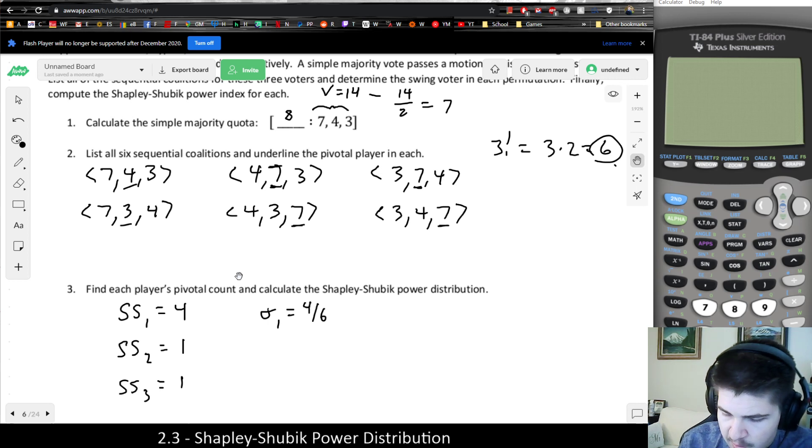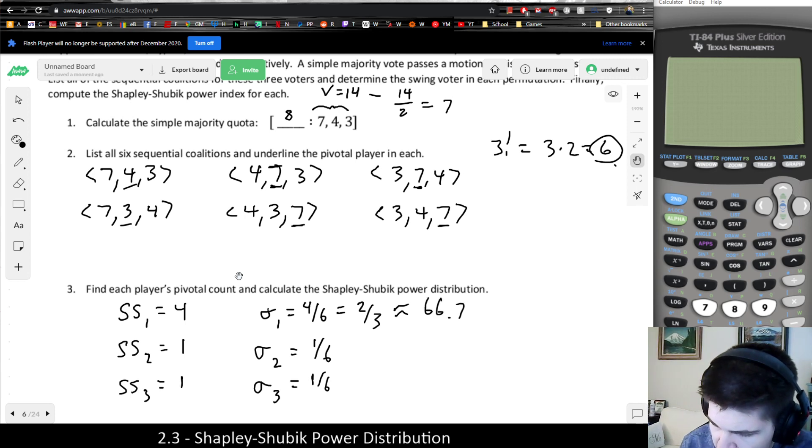And then we would take part over total. Since there's 6 total pivotal counts, player 1 is 4 out of 6, which would be 2 thirds. Player 2 was 1 out of the 6 total, and player 3 was also 1 out of the 6. And so again, reduce the fractions and convert to percentages. But that would leave us with 2 thirds, which is approximately 66.7%, and 1 sixth is 16.7%.